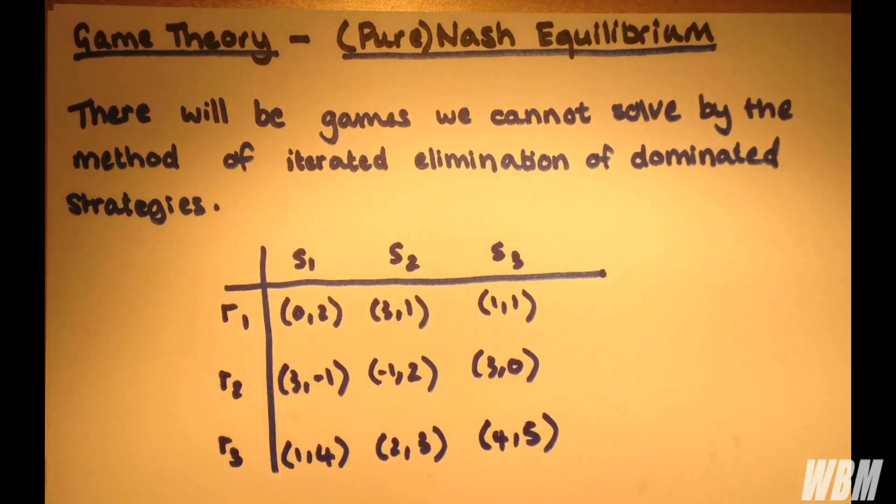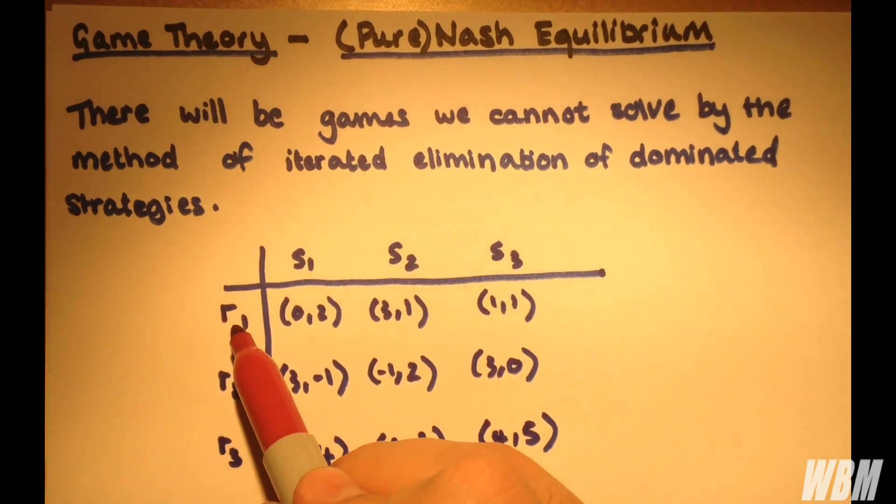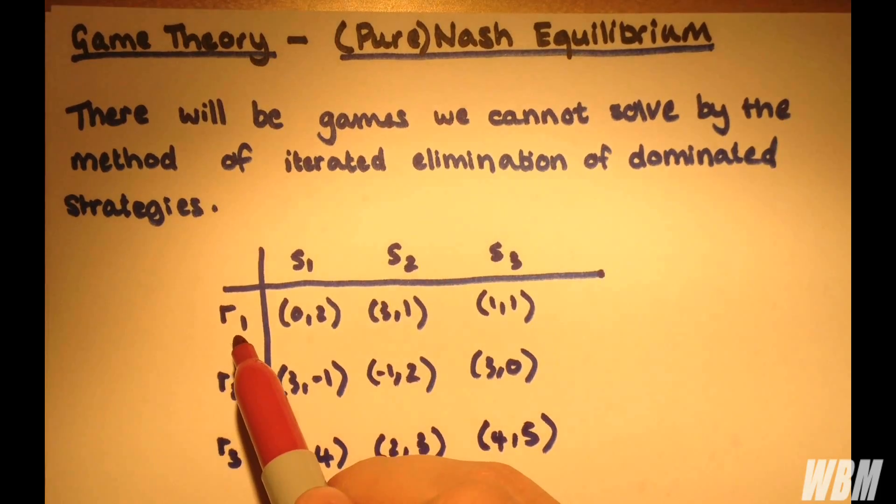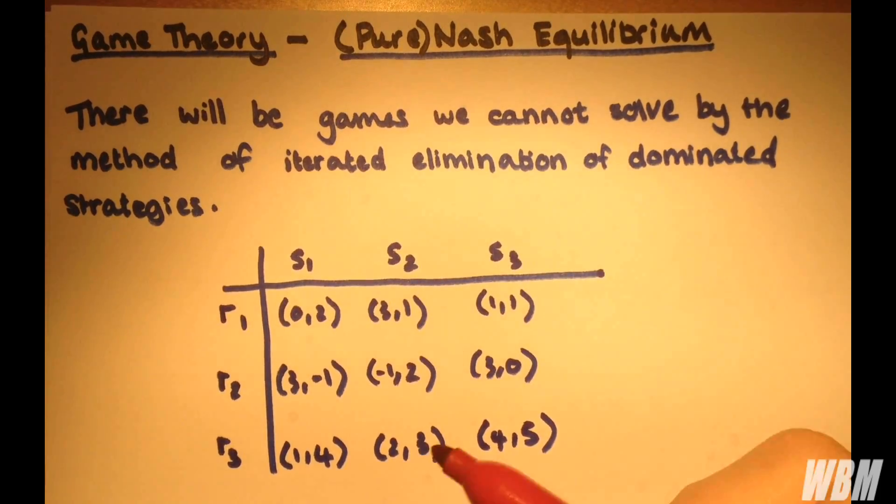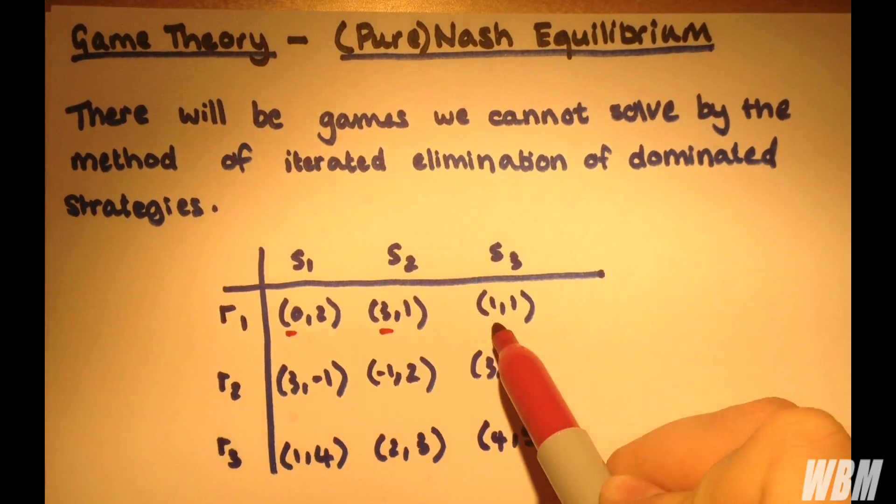So, we'll solve this game via the method of iterated elimination. So, for player one, here, R1 dominates or is dominated by absolutely nothing. How's this? Well, we look across at R1. We have 0, 3, 1.